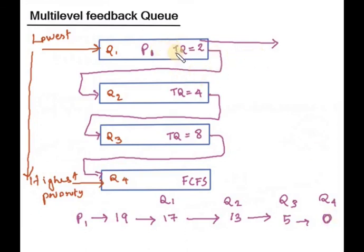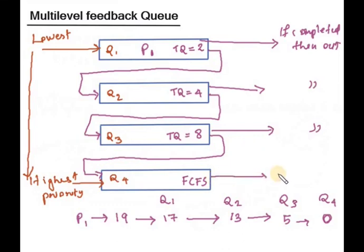If suppose 2 time quantum is enough to complete, if completed then out. If it completes at the next phase then out. If it completes at Q3 then out. Remaining all will be executed in first come first serve manner.